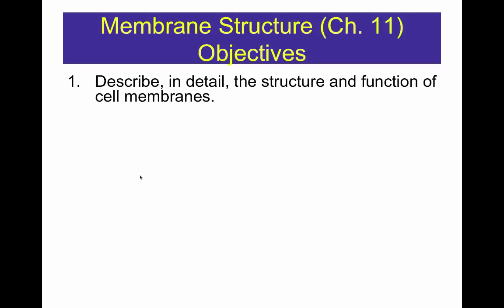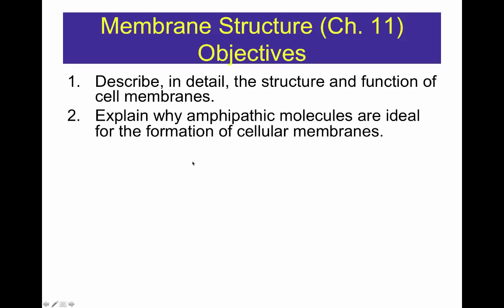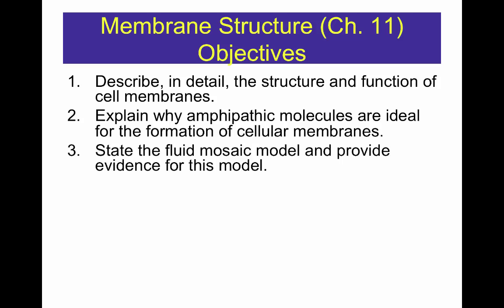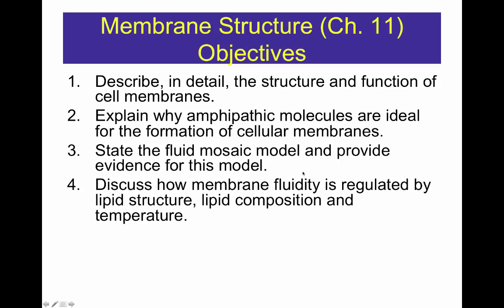Let's begin with the objectives. First, describe in detail the structure and function of cell membranes. Second, explain why amphipathic molecules are ideal for the formation of cellular membranes. Third, state the fluid mosaic model and provide evidence for this model. Fourth, discuss how membrane fluidity is regulated by lipid structure, lipid composition, and temperature.